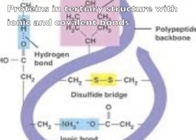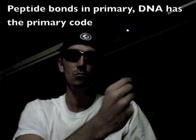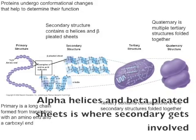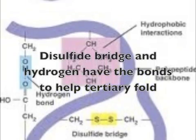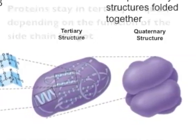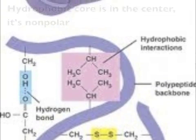Proteins in tertiary structure with ionic and covalent bonds, peptide bonds in primary — DNA has the primary code. Alpha helices and beta-pleated sheets where secondary gets involved. Disulfide bridges and hydrogen bonds help tertiary fold, can't get enough with van der Waals forces. Hydrophilic proteins stay in tertiary or quaternary depending on the function of the side chain — hydrophobic cores in the center, non-polar.